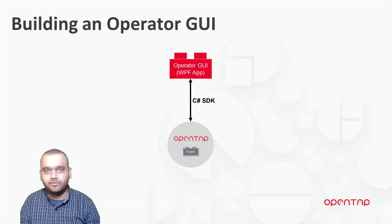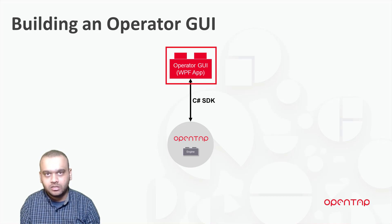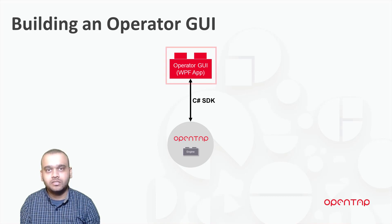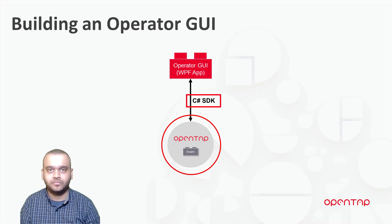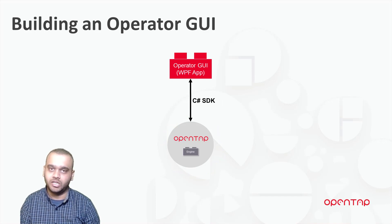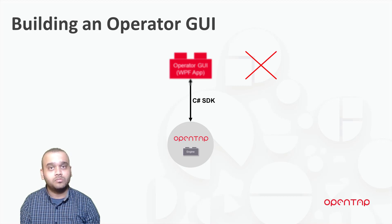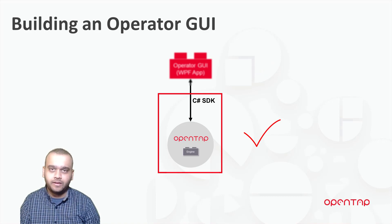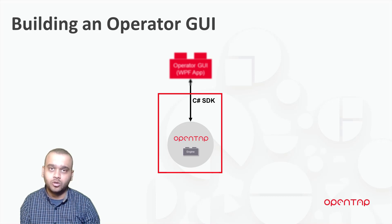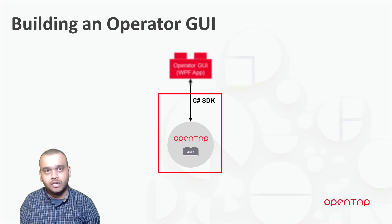Now that we've covered the feel and functionality of the operator GUI, let's talk about how we are going to build it. I will be creating a GUI-based application using the WPF framework. This will talk to the OpenTap engine by using the C Sharp SDK to select and run test plans. I will be using Visual Studio for the development of this application. The point of this series is not to go into depth about aspects of WPF, but to focus more on the integration of the application with the OpenTap engine using the C Sharp SDK. For this reason, I will gloss over some aspects of the UI code and use code snippets for quickly building the GUI elements, focusing more on the C Sharp API calls made to interact with the OpenTap engine.